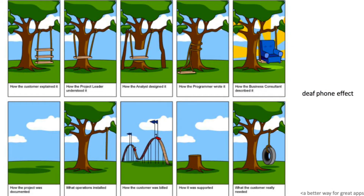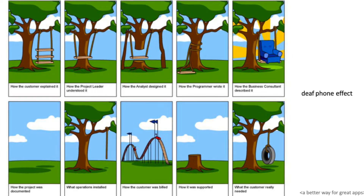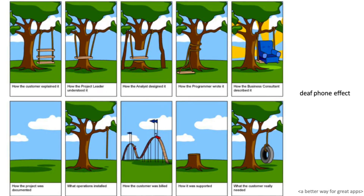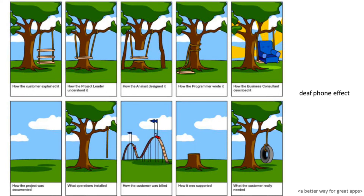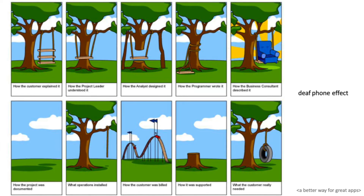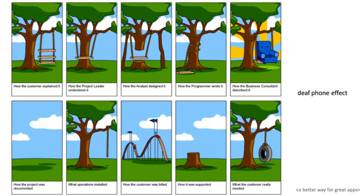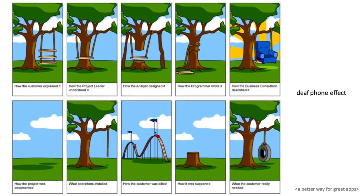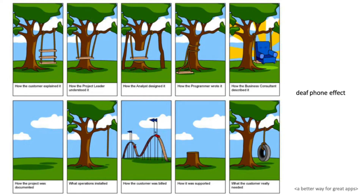Before we go into details, I will show you one of the most famous pictures of how typical development looks like. On the first picture we can see how the customer explained what he needed, how people like the project leader and analyst understood it, then how it was designed, how the developer developed it, how the project was documented, how the client built it, and what was really needed — shown on the last picture. As you can see, this is the typical development telephone effect.